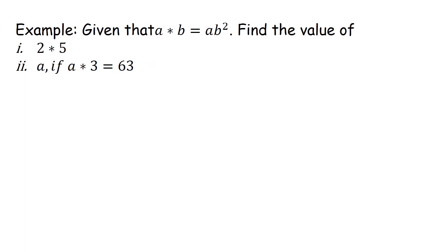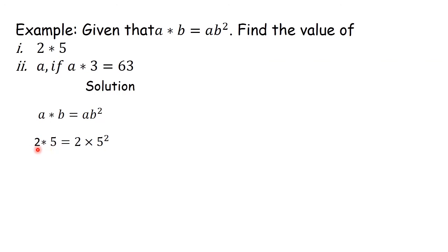Another example. Given that A★B is equal to AB², find the values of 2★5 and the value of A if A★3 is equal to 63. We begin by stating our formula. For 2★5, A is 2 and B is 5. When we substitute, we have 2 times 5 squared. 5 squared is 25, so that gives us 2 times 25, and 2 times 25 gives us 50.